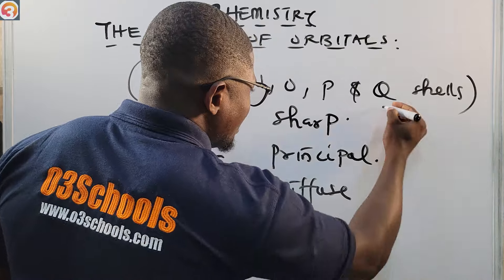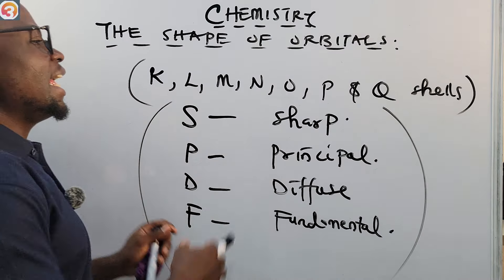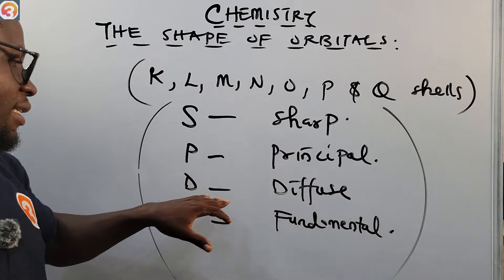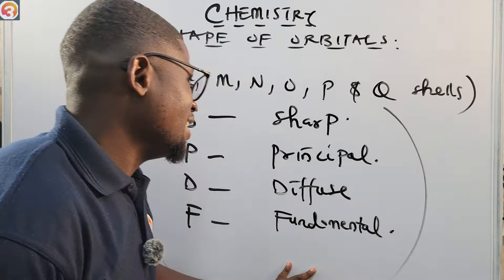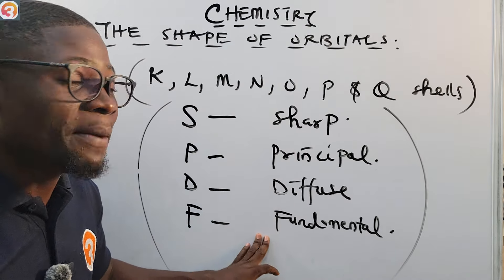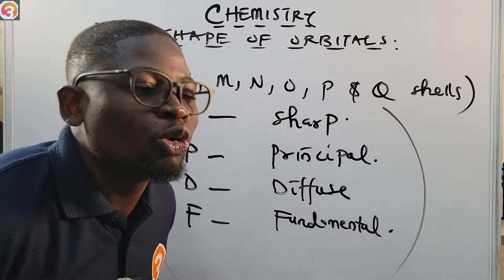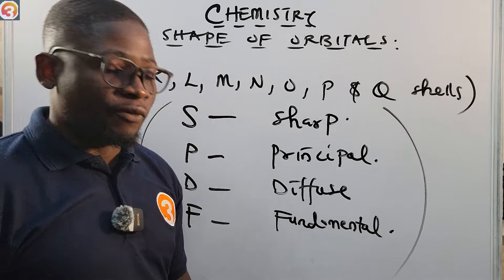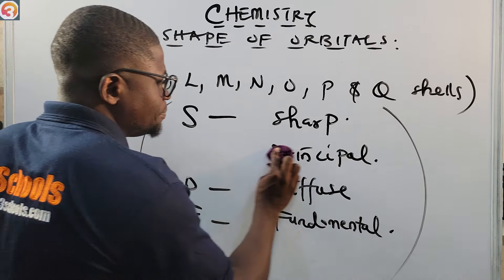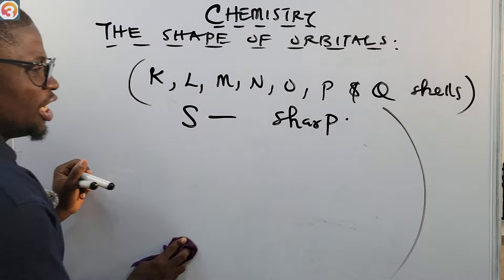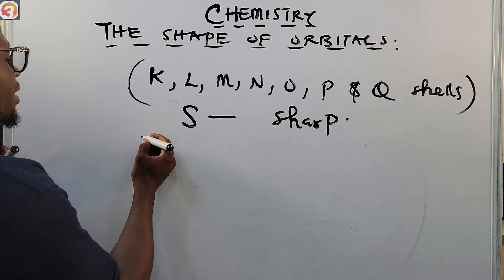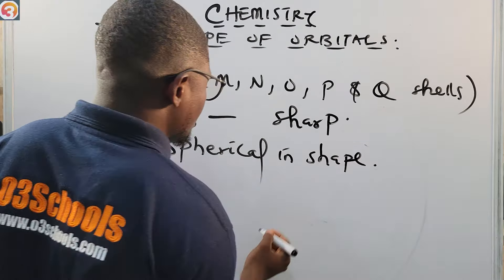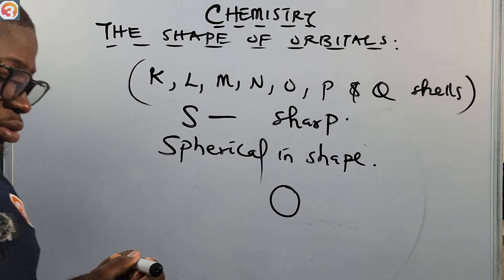So: sharp, principal, diffuse, and fundamental — use whatever method you need to remember them. Now let us begin with the S orbital. The shape of the S orbital is spherical. It is spherical in shape — circular and round, as shown in the picture.